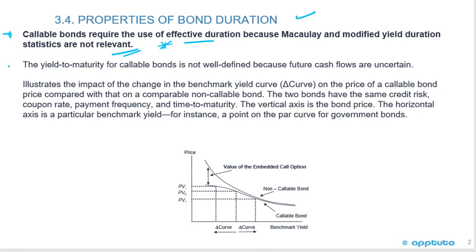The reason is because the bond can be called — we're going to see that in the chart. The yield to maturity for callable bonds is not well defined because future cash flows are uncertain. The graph illustrates the impact of the change in the benchmark yield curve on the price of a callable bond compared to a non-callable bond.